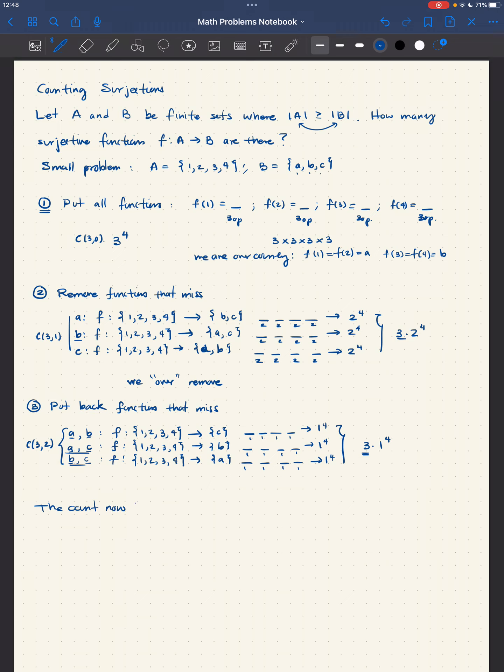So, the count now looks like this: C(3,0) times 3 to the power of 4 minus C(3,1) times 2 to the power of 4 plus C(3,2) times 1 to the power of 4.